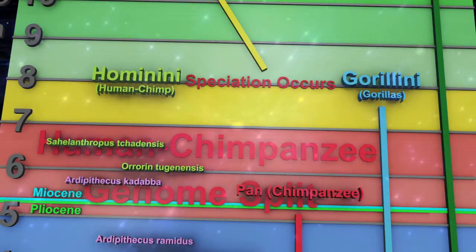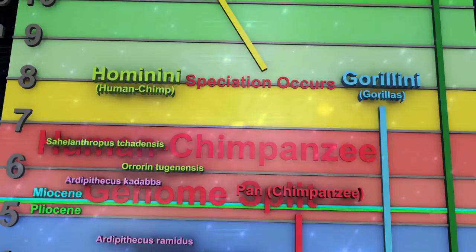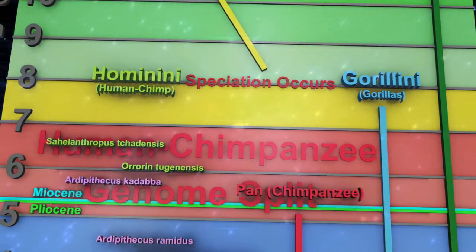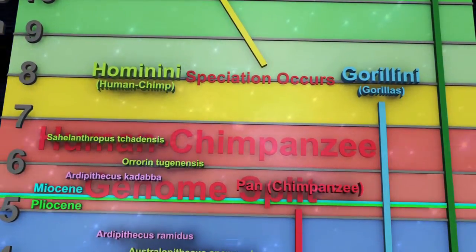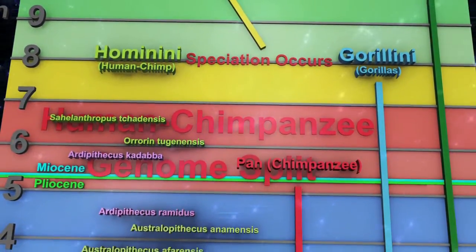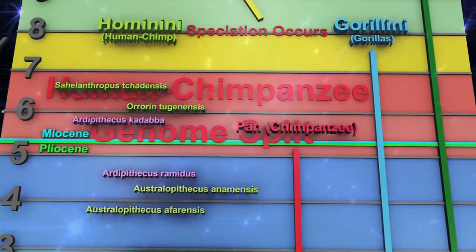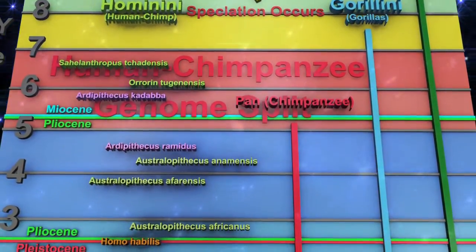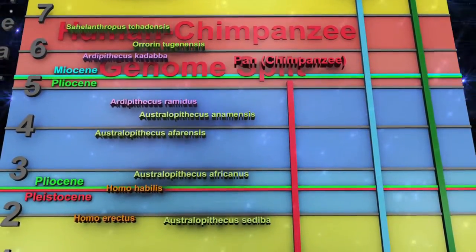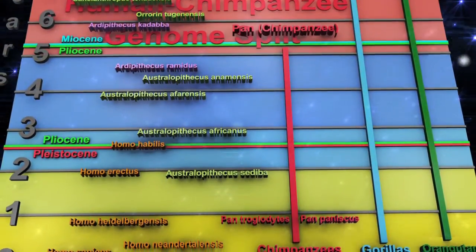Around or before the 8 million year mark, another speciation occurred, leading to the genetic split of the human-chimpanzee line from the gorilla line. This is reflected in the taxonomy placing humans and chimpanzees in the tribe Hominini and gorillas in the tribe Gorillini. Between 7 and 5 million years ago, the human-chimpanzee line underwent speciation, leading to the genetic split between the line of Homo sapiens and the chimpanzee line. The chimpanzee line later underwent speciation around the 1 million year mark, creating Pan troglodytes and Pan paniscus.